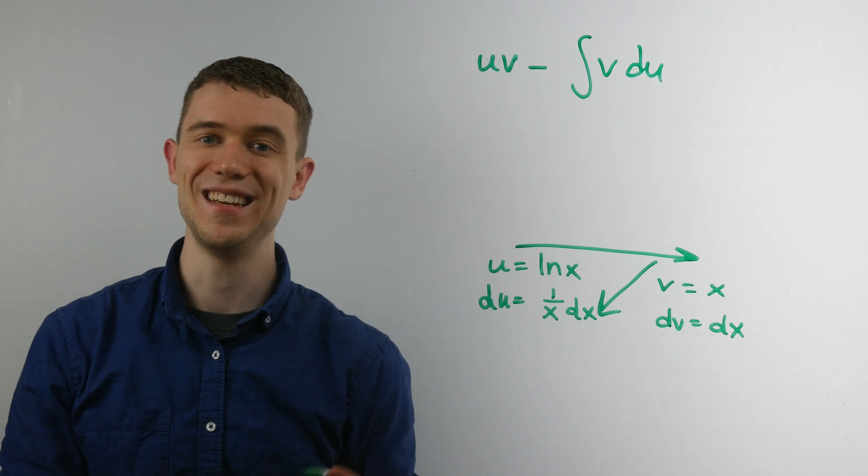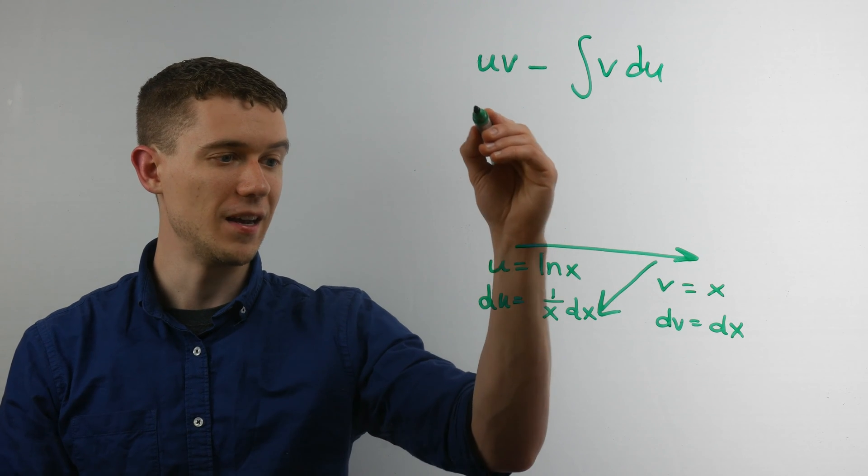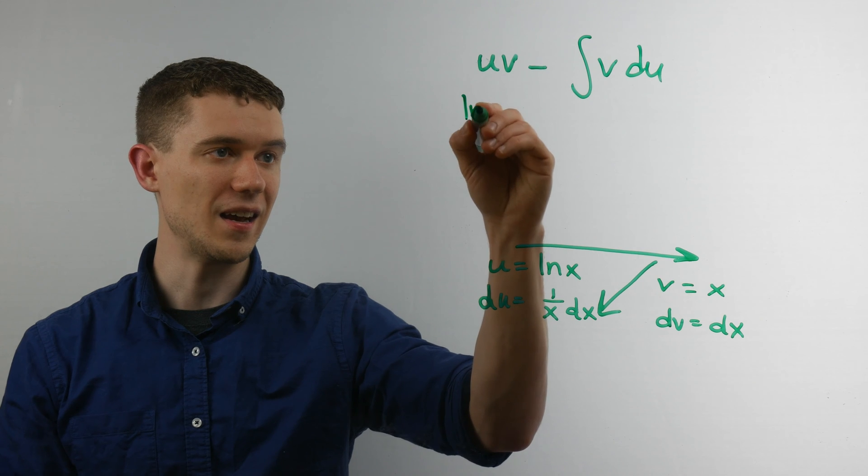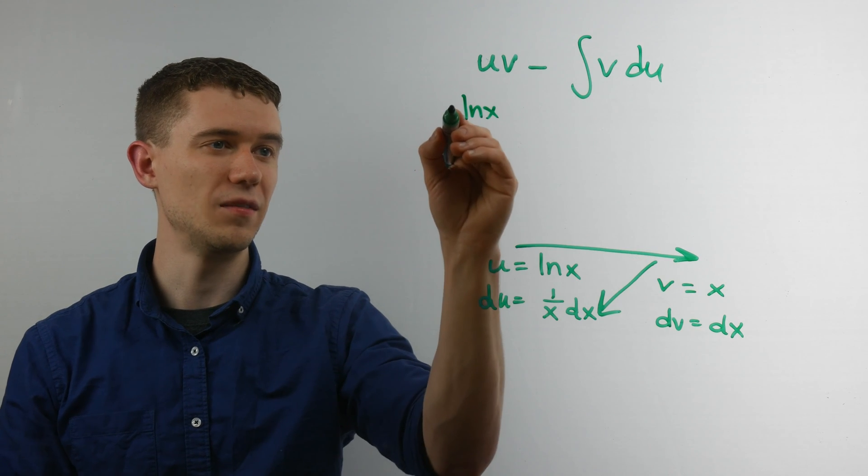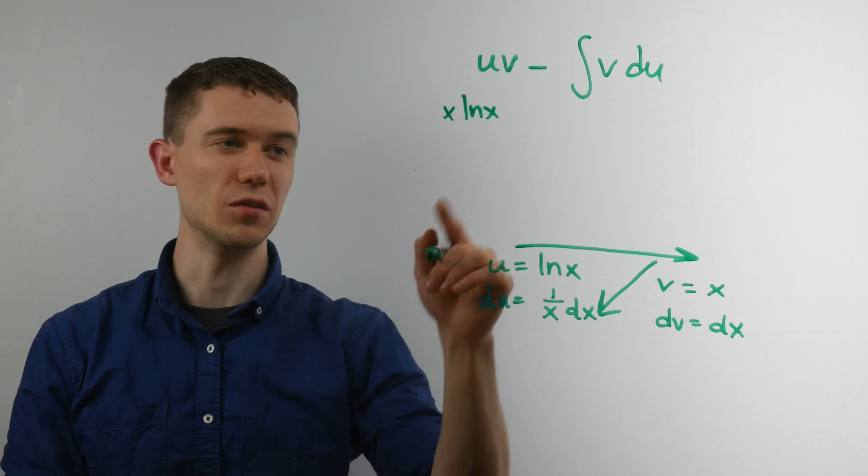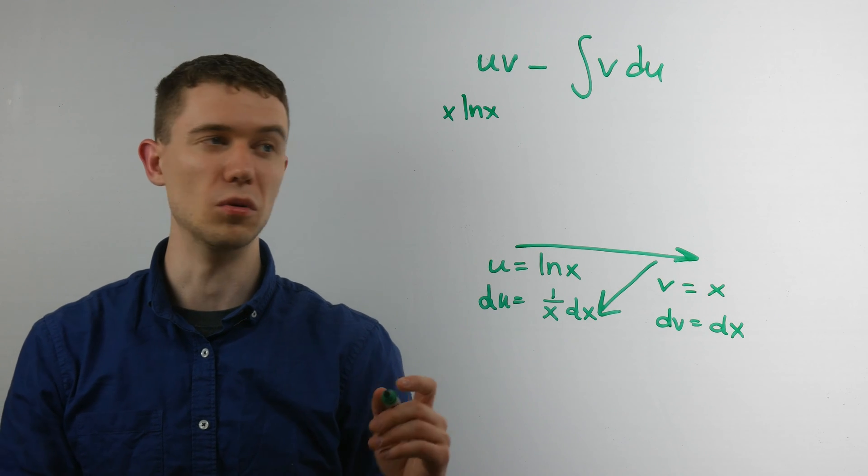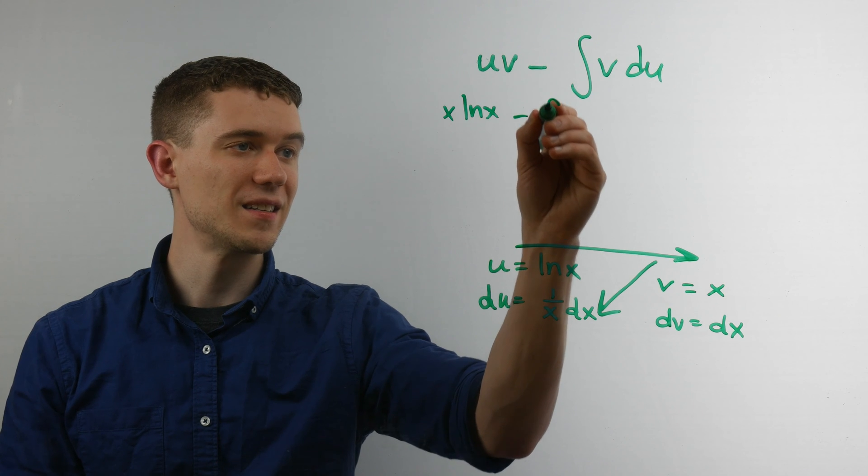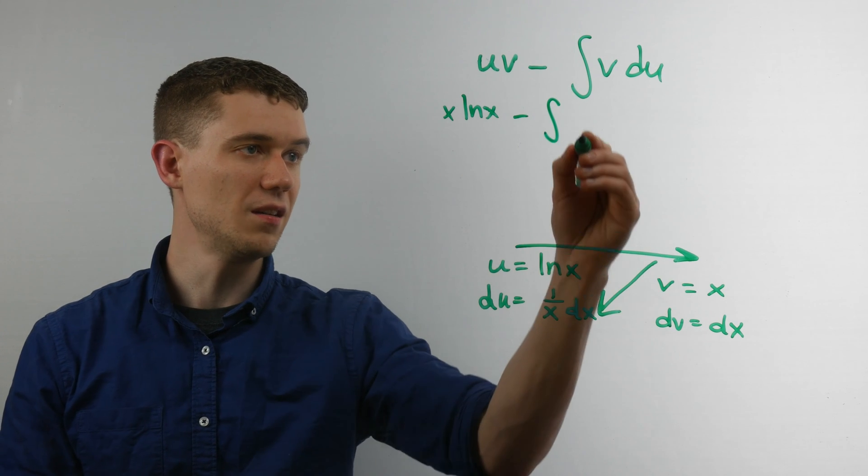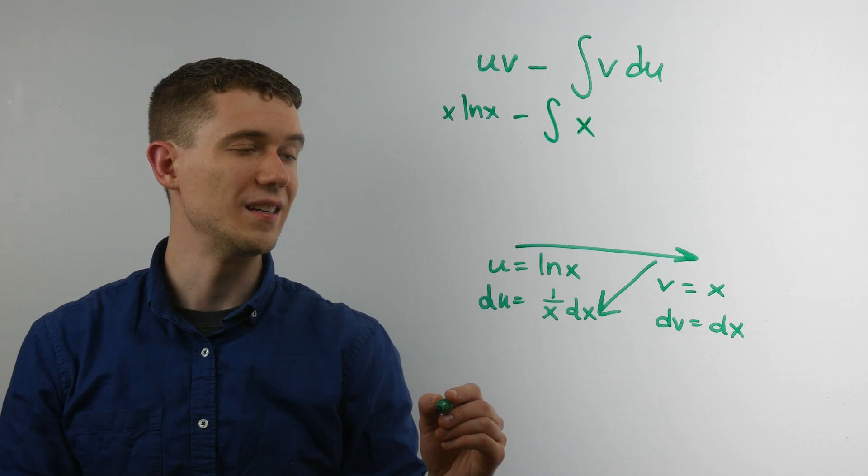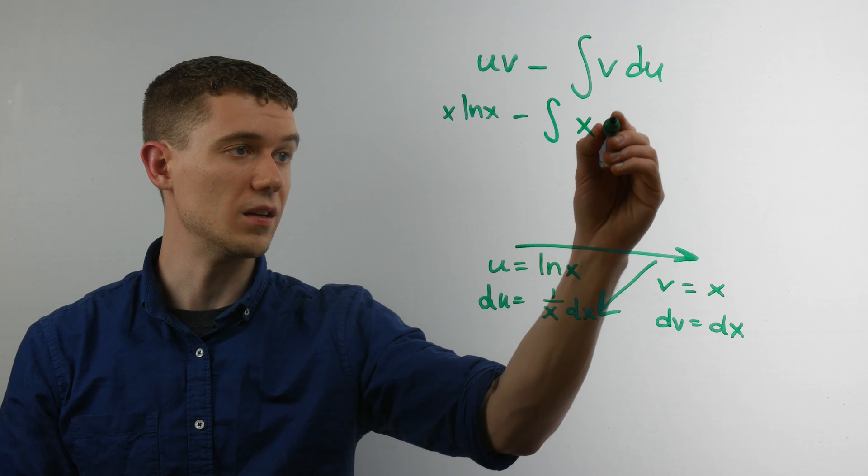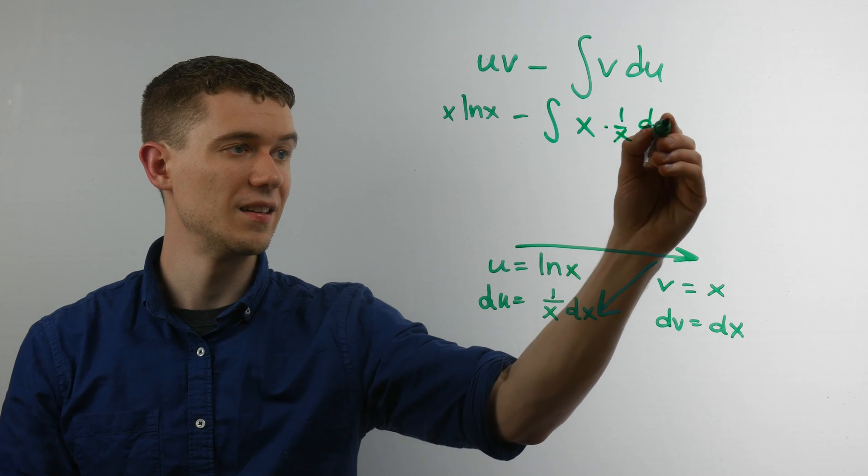So if I plug these things into this formula, it's uv. So that's ln x times x. And if you'll allow, I'll just write the x out front so I don't confuse what's inside the logarithm. This is what you'll see your teacher do a lot of the time too. Minus the integral of v, which is x, du. And du is 1 over x dx.